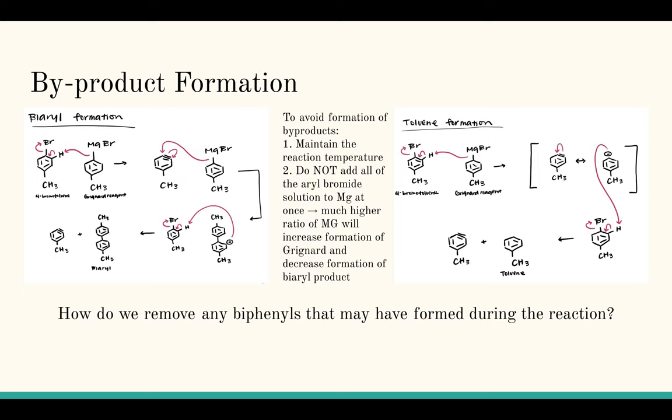So how do we remove any of these byproducts that form during the reaction? We will do something called trituration, which is when we added 5 mL of anhydrous ether to the reaction tube. And that dissolved any of the biphenyls which were formed during the reaction. And then those biphenyls were rinsed out when we rinsed into the aqueous layer.